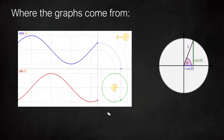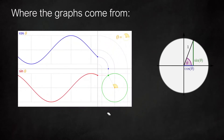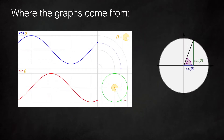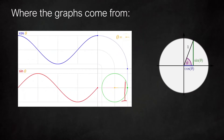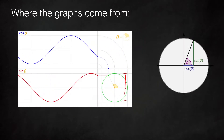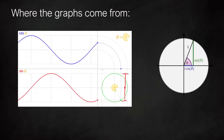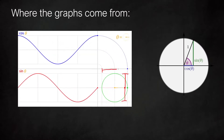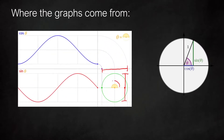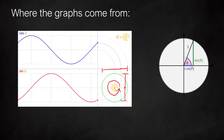Here is a little animation that shows how we get the graphs from just taking a point around the circle. You can see that sine is just plotting out the vertical displacement from the middle, and cos is doing the same but for the horizontal displacement, as we go all the way around from 0 to 360 degrees.